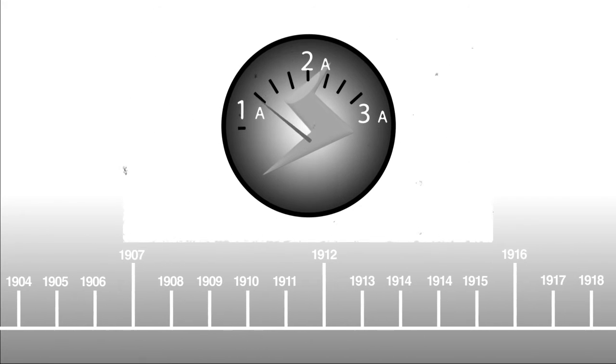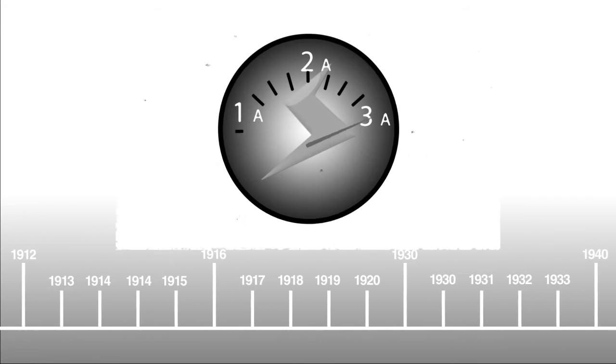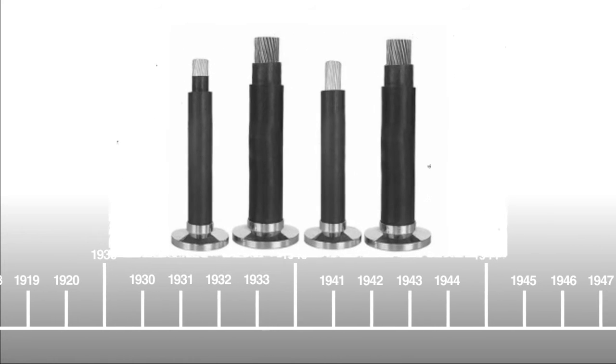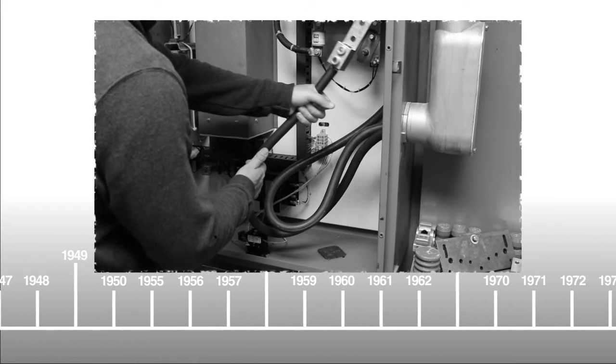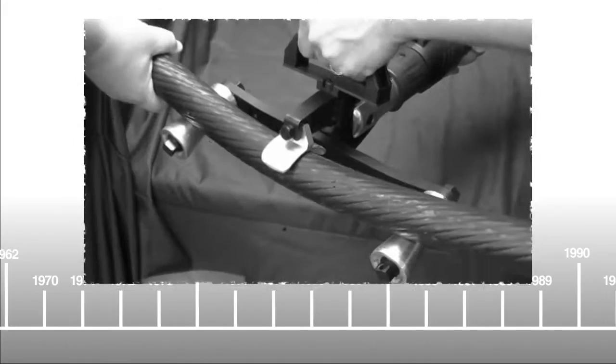Over the years, as the need for more power and amperage grow, power distribution cables continue to become larger in size, while at the same time, the enclosures which house them have become smaller and more compact.